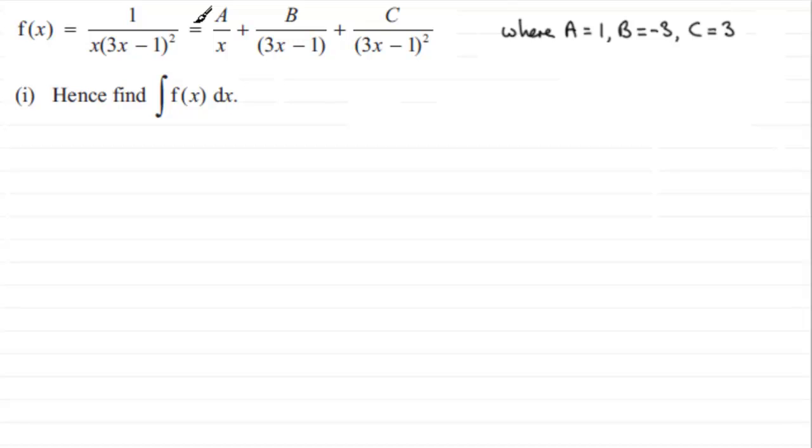But in the previous part of the question we showed that it was equal to A over x plus B over (3x minus 1) plus C over (3x minus 1) all squared, where A was 1, B was minus 3, and C was equal to 3.